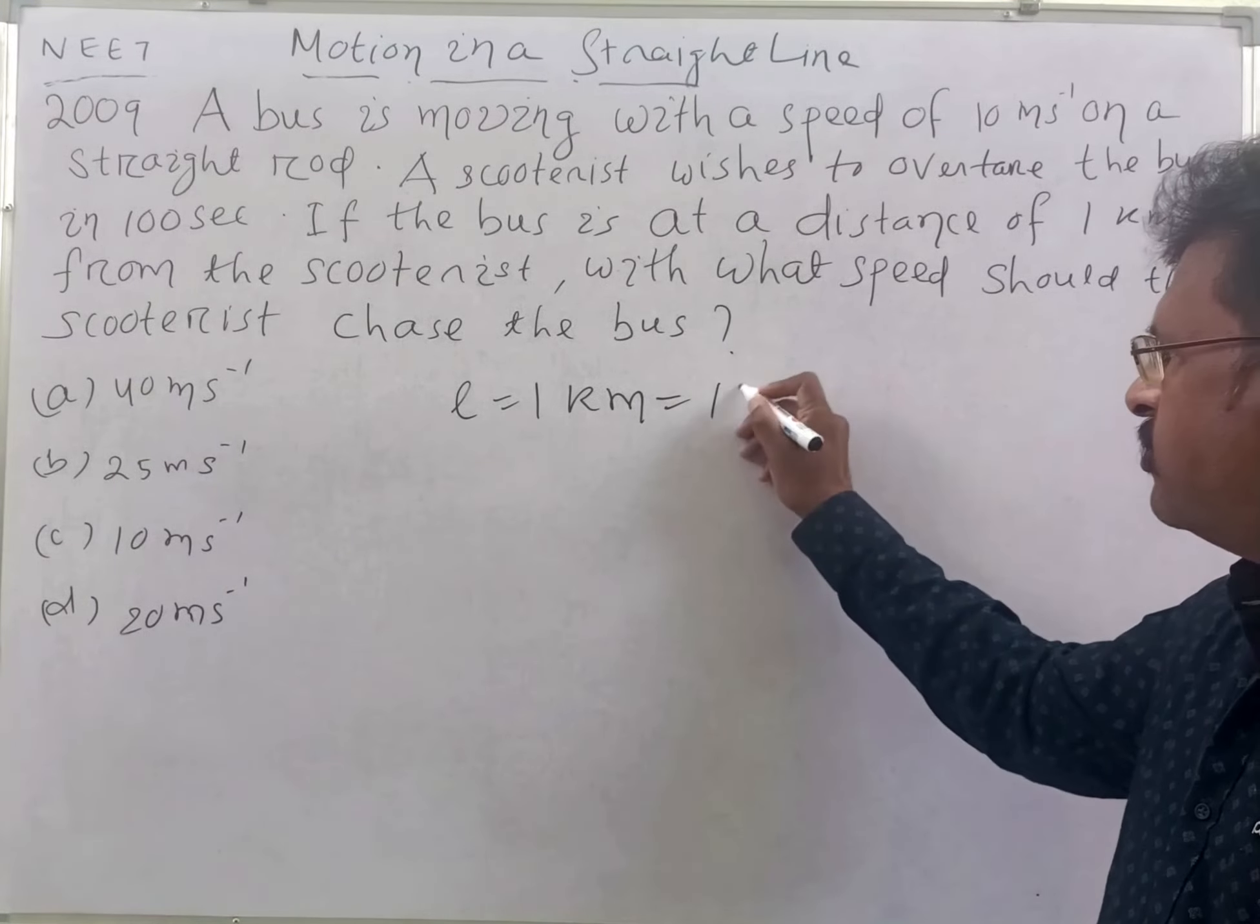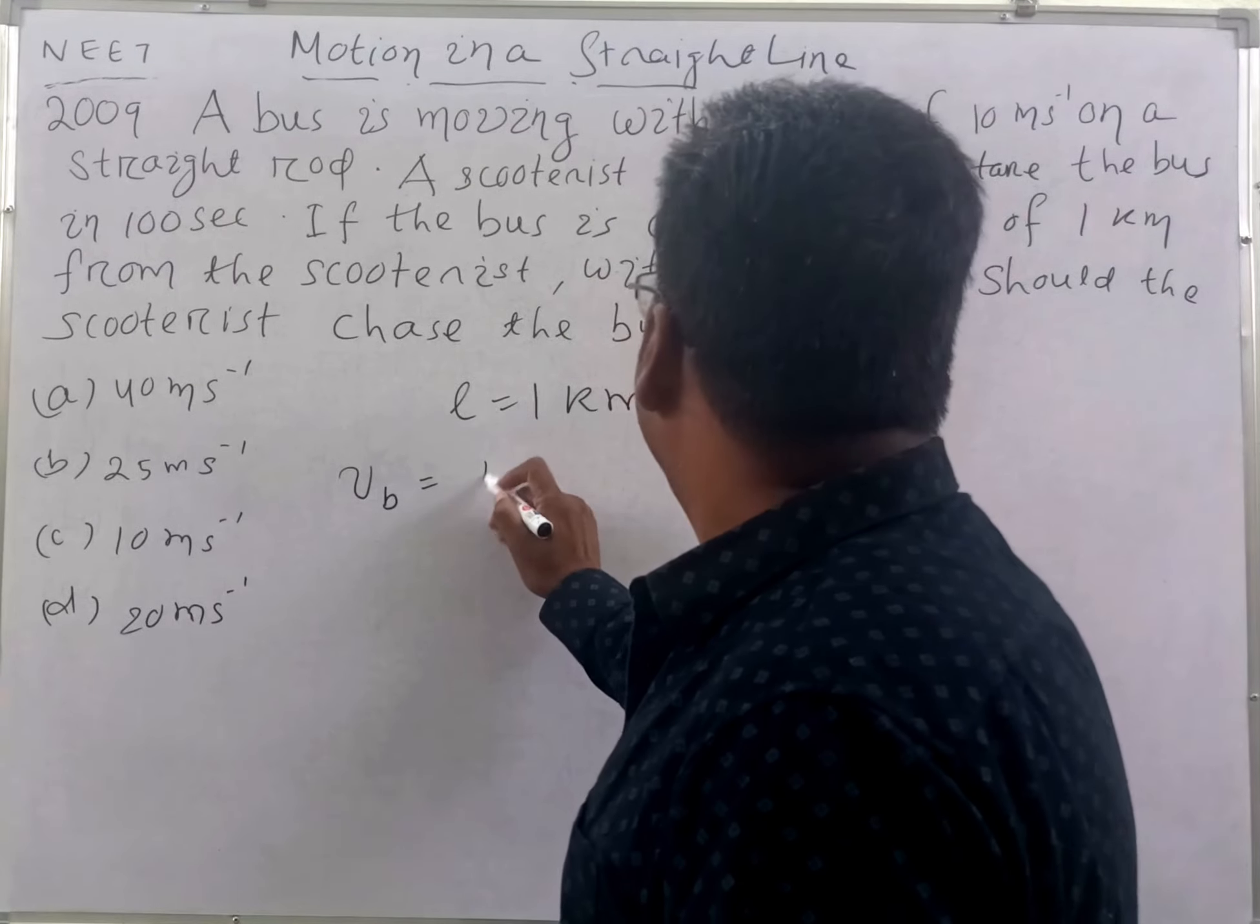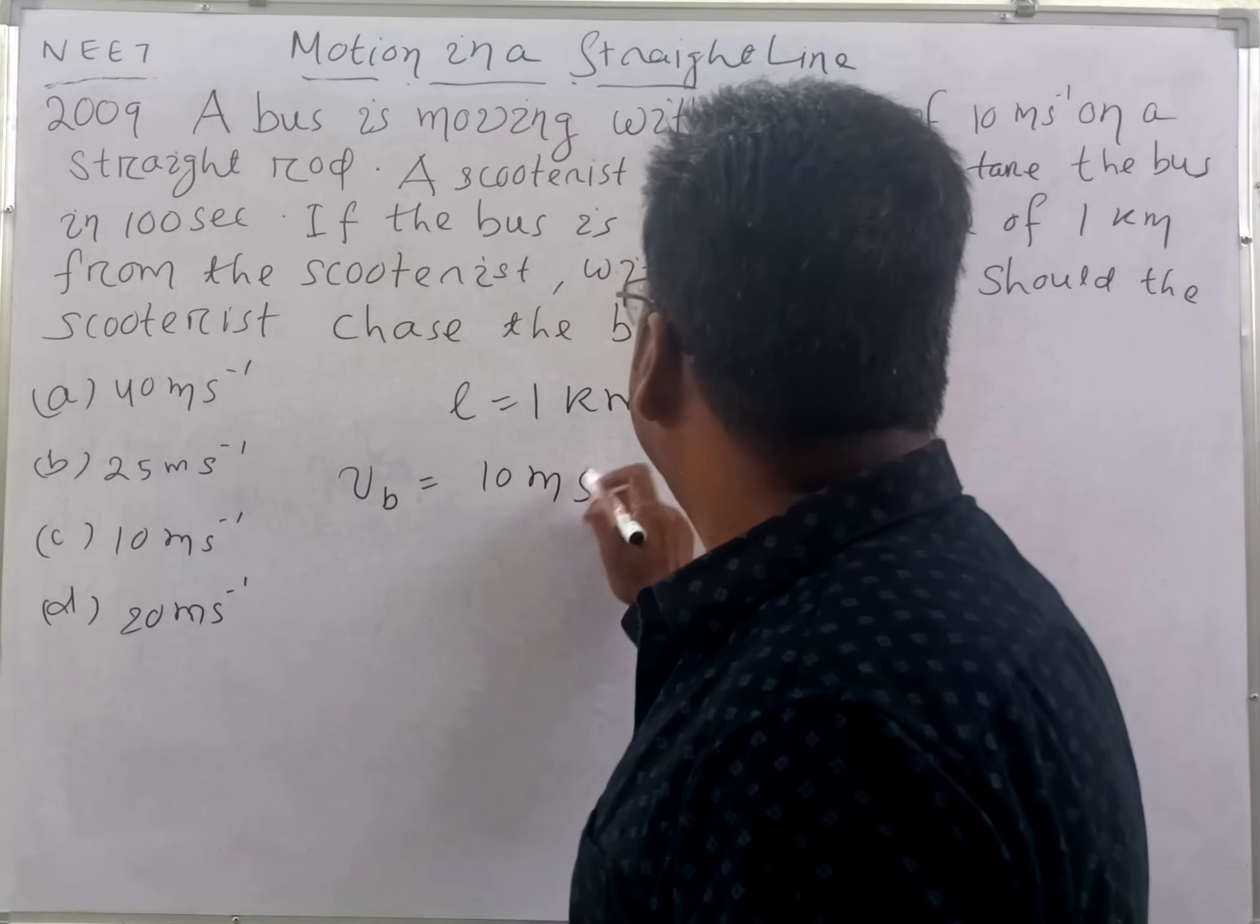The bus is moving with a speed of 10 meters per second. So the bus velocity Vb is 10 meters per second.